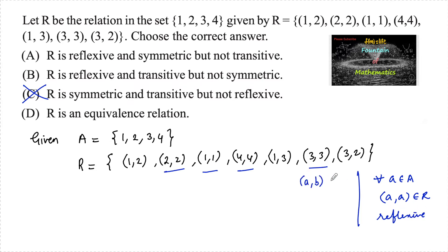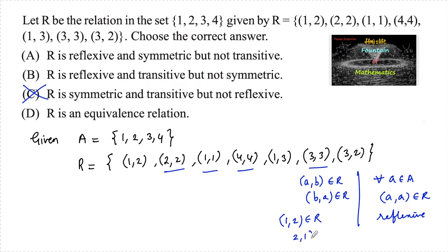Coming to symmetric: for (a, b) belonging to R, (b, a) must also belong to R. Here (1,2) belongs to R, but (2,1) does not belong to R. Therefore, the relation is not symmetric.